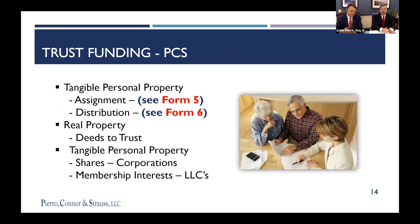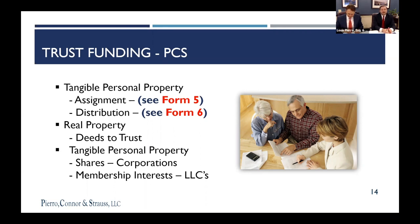We also use a memo in tandem with that, where you put the specific items you want to go to specific people — like my Rolex to my son, or my diamond ring to my daughter — because we like to head off those fights as best we can. Ultimately it's up to the client, but generally speaking, when the client decides who gets what, it's a lot easier at that point in time.